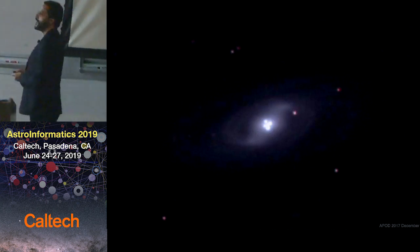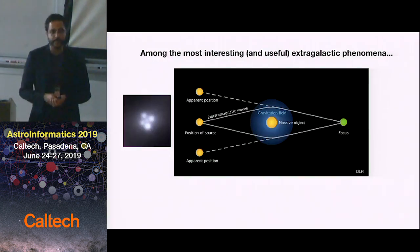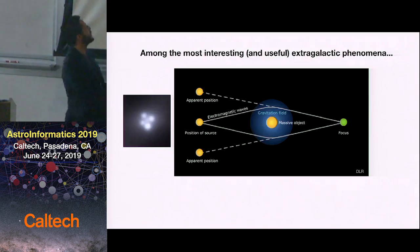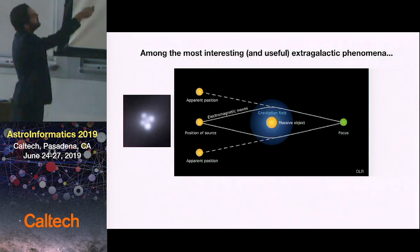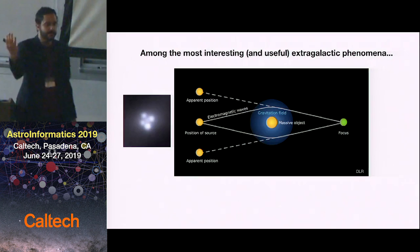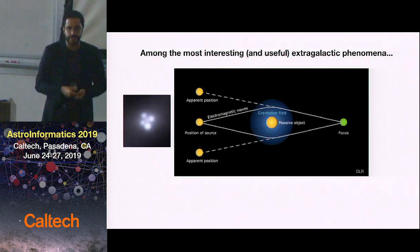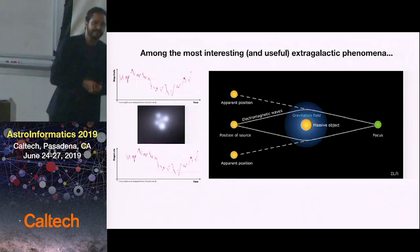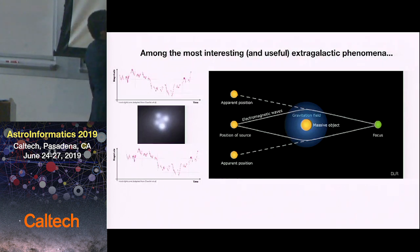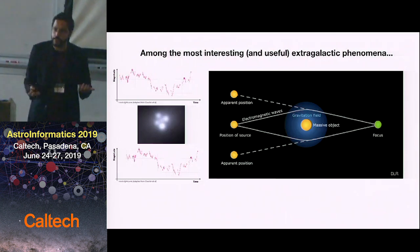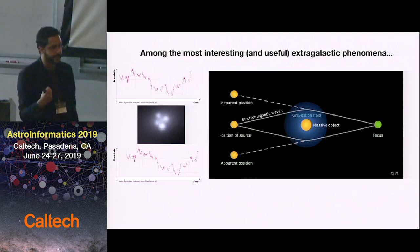The next good reason why strongly-lensed quasars are important is because they are variable objects. They are among the most interesting and useful extragalactic phenomena. A strongly-lensed quasar is a phenomenon that happens when the light of a background quasar is deflected in the gravitational field of a galaxy between Earth and the quasar, creating multiple images at different positions in the sky. Since quasars are variable and the light paths differ, this creates a time delay between image variations.